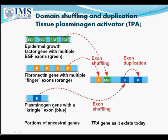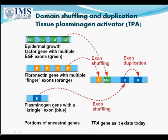Domain shuffling and duplication in the tissue plasminogen activator gene — as we can see here, the epidermal growth factor gene with multiple EGF exons is shown in green, whereas fibronectin genes with multiple finger exons are shown in orange, and the plasminogen gene with a kringle exon is shown in blue. With the help of these, the TPA gene is made. A segment of EGF comes along with a segment of fibronectin, and a segment of kringle exons combine together in the TPA gene. The kringle exon also duplicates, leading to the formation of the entire TPA gene.